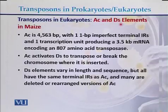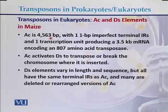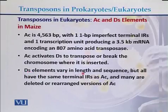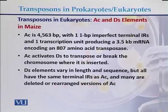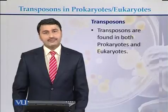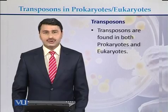Activator elements can be up to 5563 base pairs with 11 base pair imperfect terminal inverted repeat sequences. The Ac element activates Ds to transpose or break the chromosome where it is inserted. Ds elements vary in length and sequence, all have the same terminal IR as Ac, and many are deleted or rearranged versions of activators. In conclusion, transposons are found in both prokaryotes and eukaryotes.